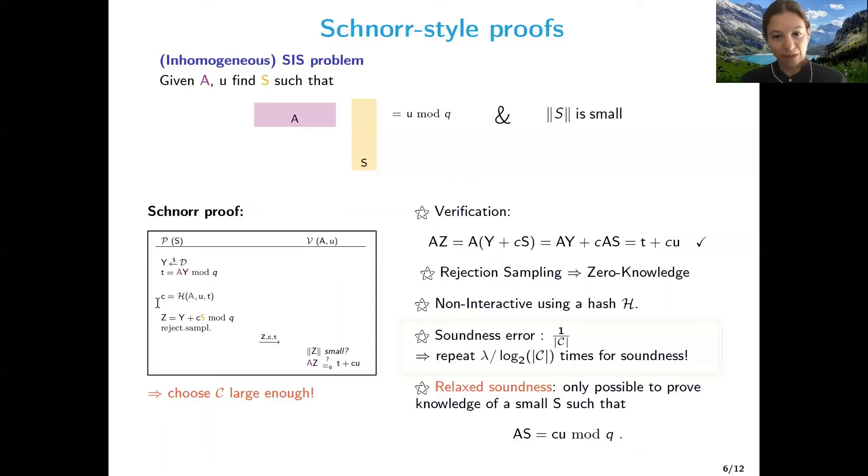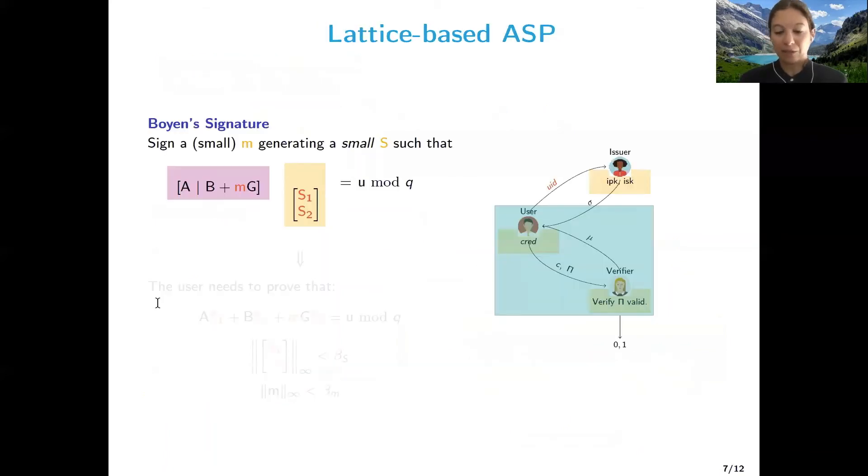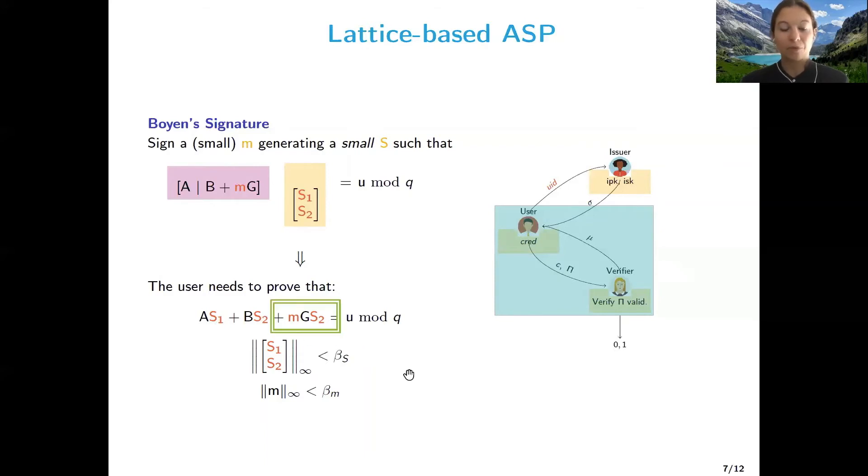So this proof actually doesn't work. And on top of it, we have another problem. As we said before, we want to prove that we know S1, S2, M such that AS1 plus BS2 plus MGS2 is equal to U mod Q. And the left hand side can be proven with Schnorr proofs up until BS2. But then the problem is how to deal with the part that has a multiplication of secrets. And we showed in a previous paper that this actually requires a blow up in the dimension and more complicated proofs to do it.